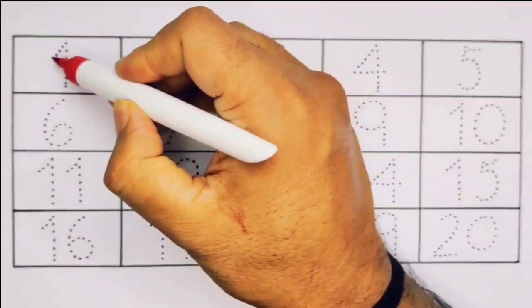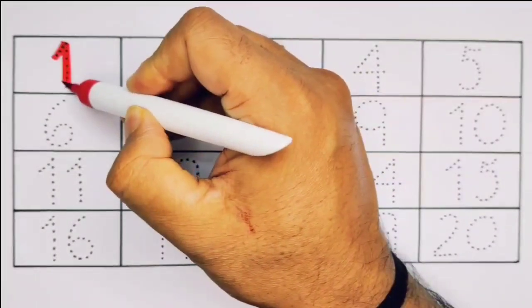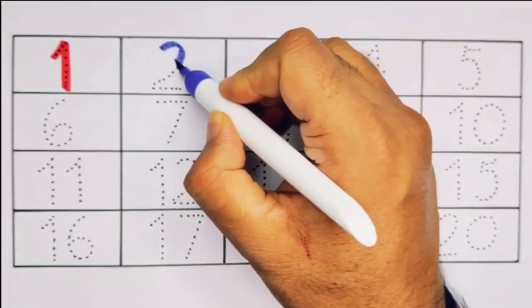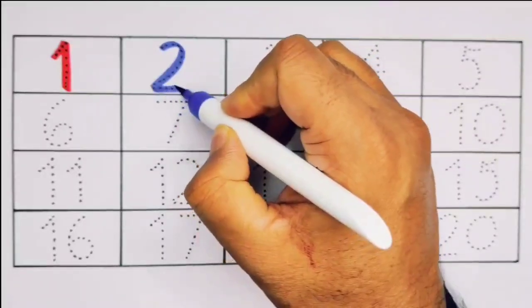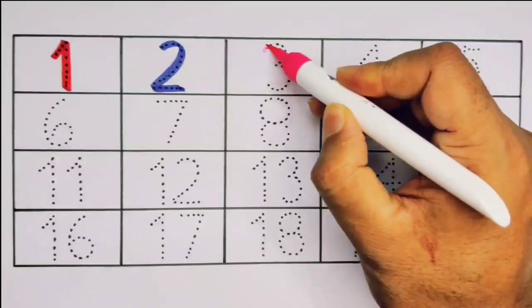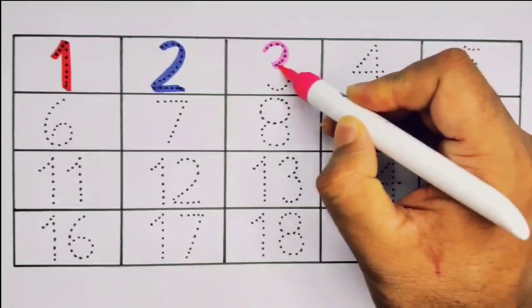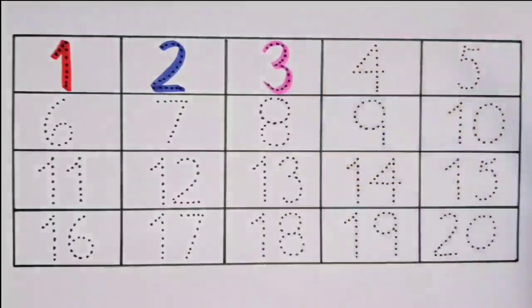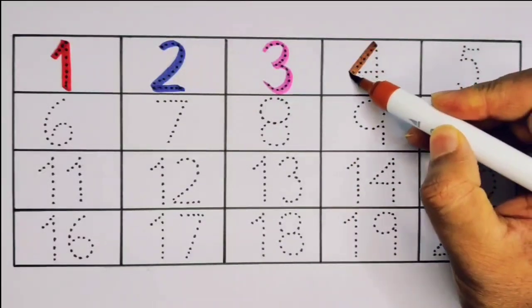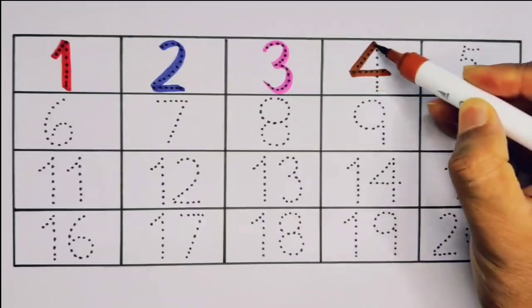First, 1. Number 1. Next, 2. Number 2. Next kids, it's 3. Number 3. What will come next kids? It's 4. Number 4.